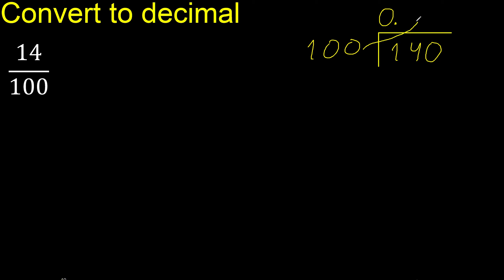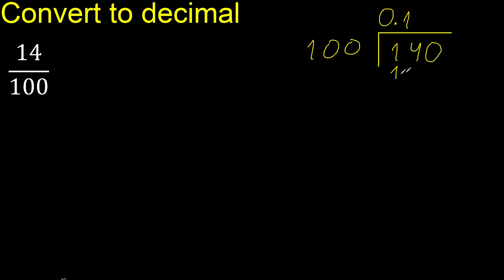Therefore, 100 multiplied by which number is nearest to 140 but not greater. Multiplied by 2 is 200, which is greater. Therefore, multiplied by 1 is 100. Subtract, remainder is 40. There is no number that goes down, therefore complete.